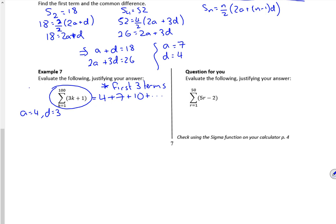So what it wants, it wants the sum of the first 100 terms. Don't be put off by this sigma notation, which puts a lot of people off. I just want the sum of the first 100 terms.